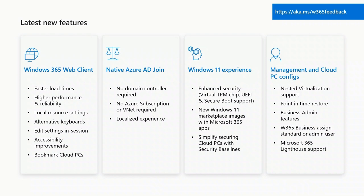We've built and rebuilt the business portal so you can do the entire end-to-end workflow: purchase, assign, create new users, assign licenses, configure global or individual admin settings — everything in a unified portal. You don't need to break out of the Windows 365 portal at all. We now also provide the ability to assign either admin or standard user rights in both our business and enterprise products. Some groups of users you may want to give full admin access on their cloud PC; others you may want to restrict to standard user. That's now configurable in both products.